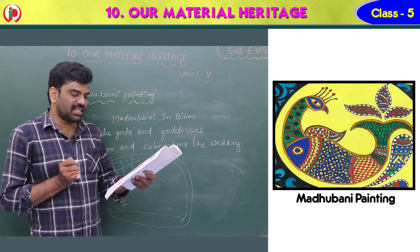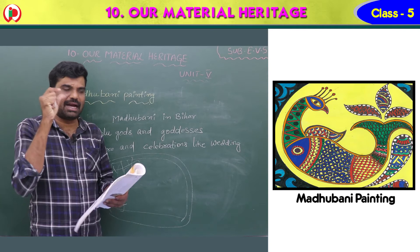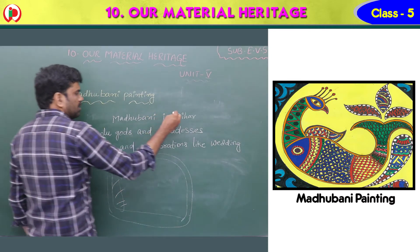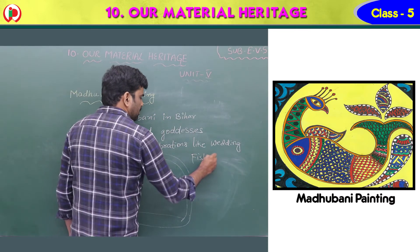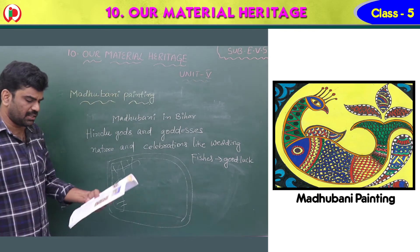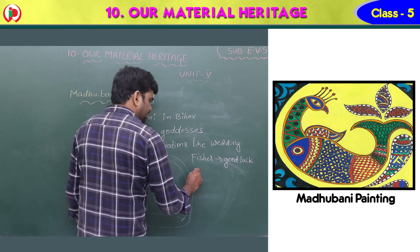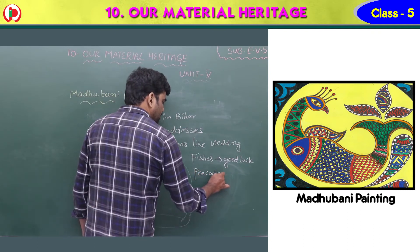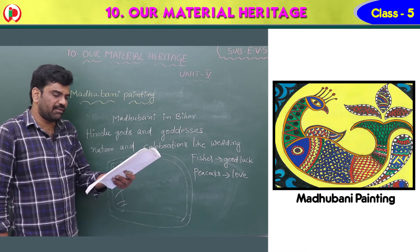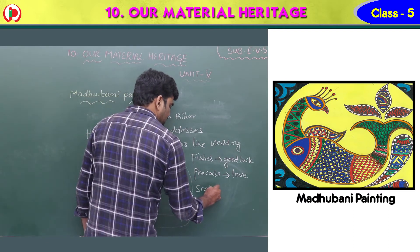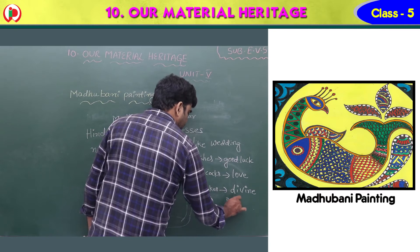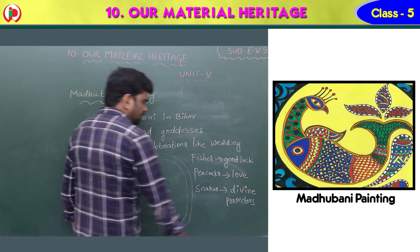The eyes of the human figures are shown as big. Fishes in Madhubani painting symbolize good luck. Peacock stands for love. Snakes denote divine protectors — snakes are the divine, great protectors.